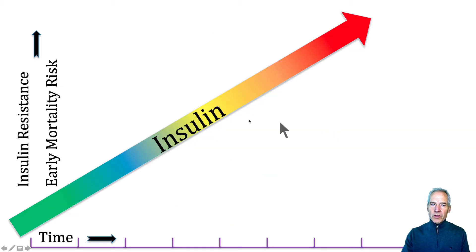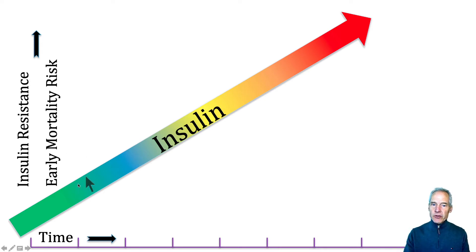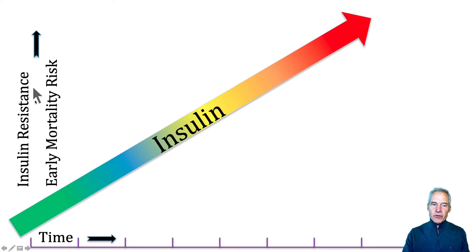First of all, glucose is a surrogate marker. The disease diabetes is really a disease of insulin resistance, and the best way to measure that is through fasting insulin. But glucose is a valuable marker as well, and as insulin resistance increases — as I showed in the biomarker one video — early mortality risk increases as well.